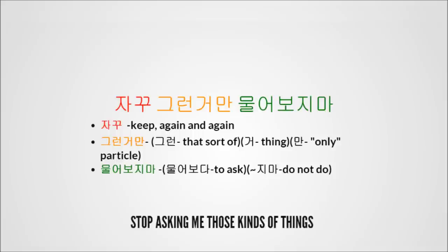The next line is 자꾸 그런 거만 물어보지 마. That's basically three words. The first word is 자꾸, which means 'again and again' or 'keep doing that.' Then we have the orange word 그런 거만, which is three different things: 그런 means 'that sort of' — earlier we had 이런 meaning 'this sort of,' now 그런 means 'that sort of.' Then 거 comes from 것, which means 'thing.' And the particle 만 means 'only.' So 그런 거만 means 'that sort of thing only.'